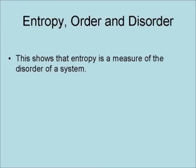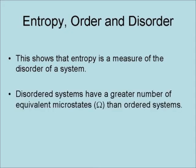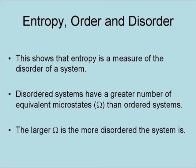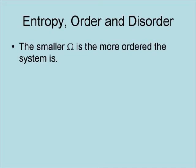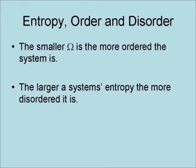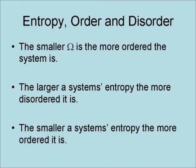This shows that entropy is a measure of the disorder of a system. Disordered systems have a greater number of equivalent microstates than ordered systems. The larger omega is, the more disordered the system is. Consequently, the smaller omega is, the more ordered the system is. As a result, the larger a system's entropy, the more disordered it is, and the smaller a system's entropy, the more ordered it is.